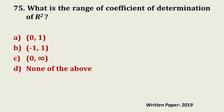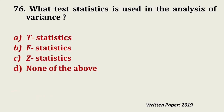Question number 75: What is the range of the coefficient of determination, r-squared? A: 0 to 1, B: minus 1 to 1, C: 0 to infinity, D: none of the above. The answer is 0 to 1.